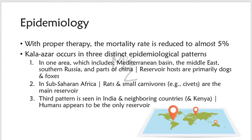Epidemiology. With proper therapy, the mortality rate is reduced to almost 5%. Kala-Azar occurs in three distinct epidemiological patterns. In one area, which includes the Mediterranean Basin, the Middle East, Southern Russia, and parts of China, reservoir hosts are primarily dogs and foxes. In sub-Saharan Africa, rats and small carnivores such as civets are the main reservoir. The third pattern is seen in India and neighbouring countries, where humans appear to be the only reservoir.